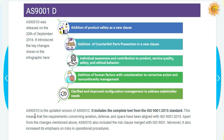AS9100 Revision D is the updated version of Revision C. It includes the complete text from ISO 9001:2015, meaning that requirements concerning aviation, defence, and space have been aligned with ISO 9001:2015. Apart from the changes mentioned above, AS9100 Revision D also includes the risk clause merged with ISO 9001, and increased emphasis on risk in operational procedures.